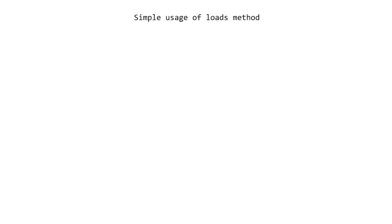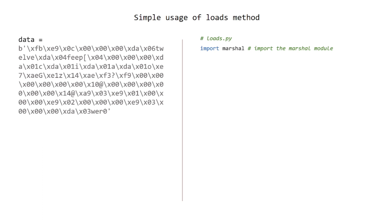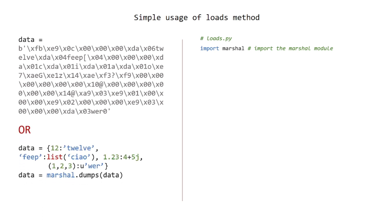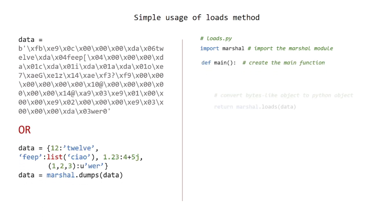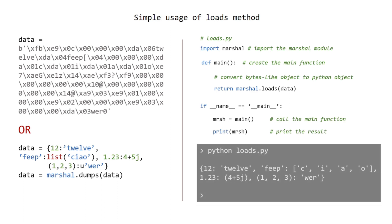Simple usage of the loads method. Create a loads.py file. Import the Marshall module. Add a test data bytes-like object, or use dumps to get the value. Create the main function to convert the bytes-like object to a Python object. Call the main function and print the result. Run in terminal and see the results.